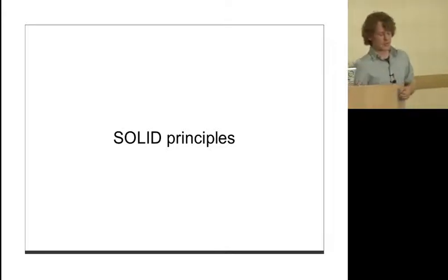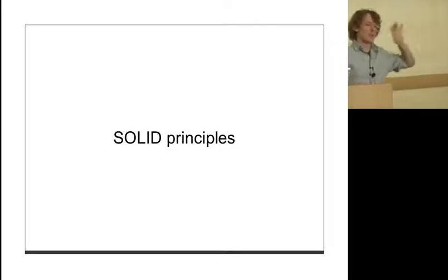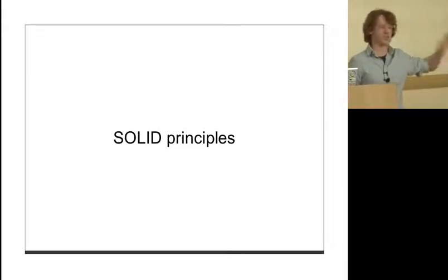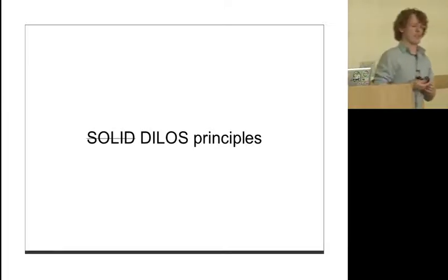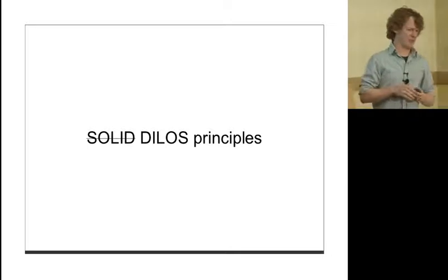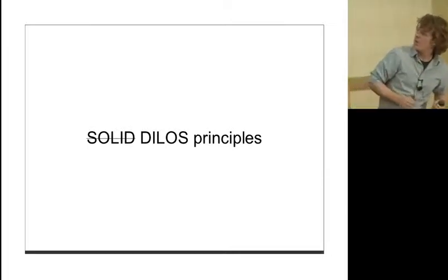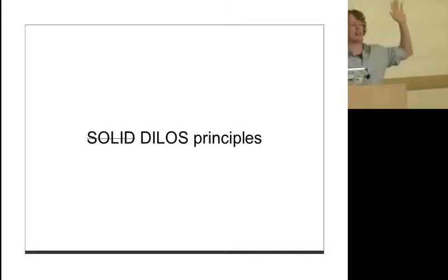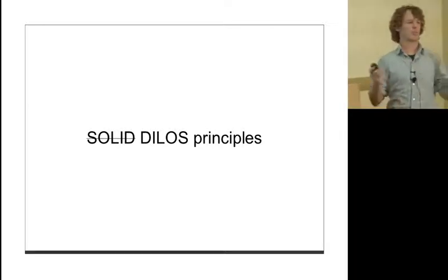So I want to talk about principles as responses to problems, and in particular, the SOLID principles. Since Clojure is different from object-oriented programming - we're kind of rejecting the idea of mutable state in general - there are so many things different in Clojure than OO that I'd like to talk about the DILOS principles instead of the SOLID principles. This is obviously a totally different thing. So who knows what a DILOS is? It's the plural of DILO.